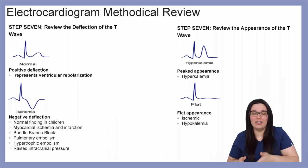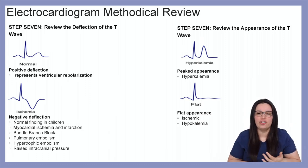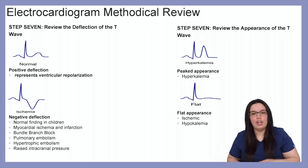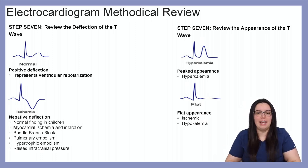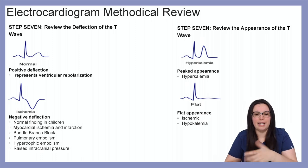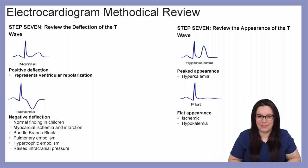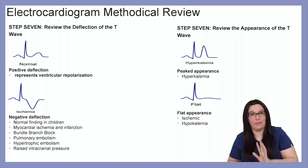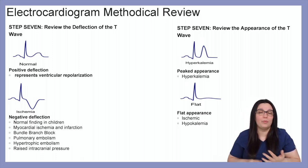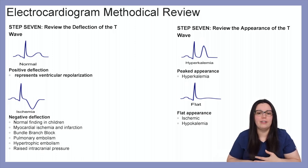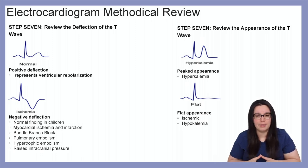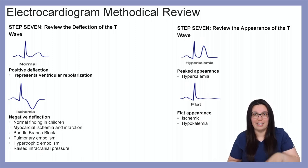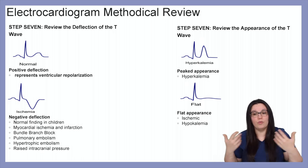Step seven: review the deflection and appearance of our T waves, just as we did with our P waves. A positive deflection represents ventricular repolarization. A negative deflection of our T waves can be a normal finding in children, or can indicate myocardial ischemia or infarction, bundle branch blocks, pulmonary embolisms, hypertrophic cardiomyopathy, or raised intracranial pressure.